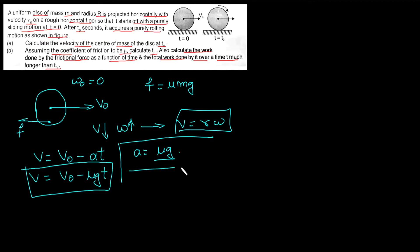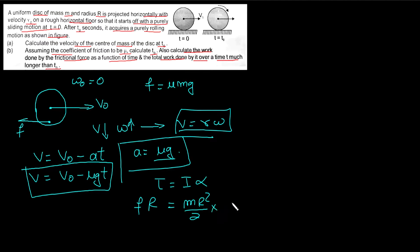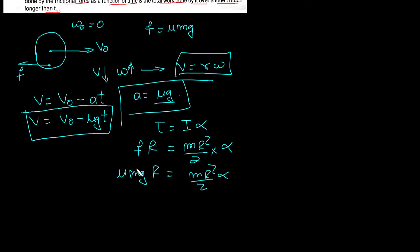For angular velocity, we use torque = Iα. The torque is friction force multiplied by radius, which equals the moment of inertia (mr²/2) times α. So μmg·r = (mr²/2)·α. From here, m cancels with m and one r cancels with r, giving us α = 2μg/r.